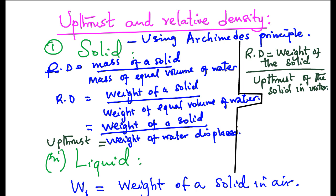This shows us that we can determine relative density by weighing the solid in air, determining the up thrust by finding the weight of water displaced when immersed in a given volume of water, and then dividing the two to find the relative density.